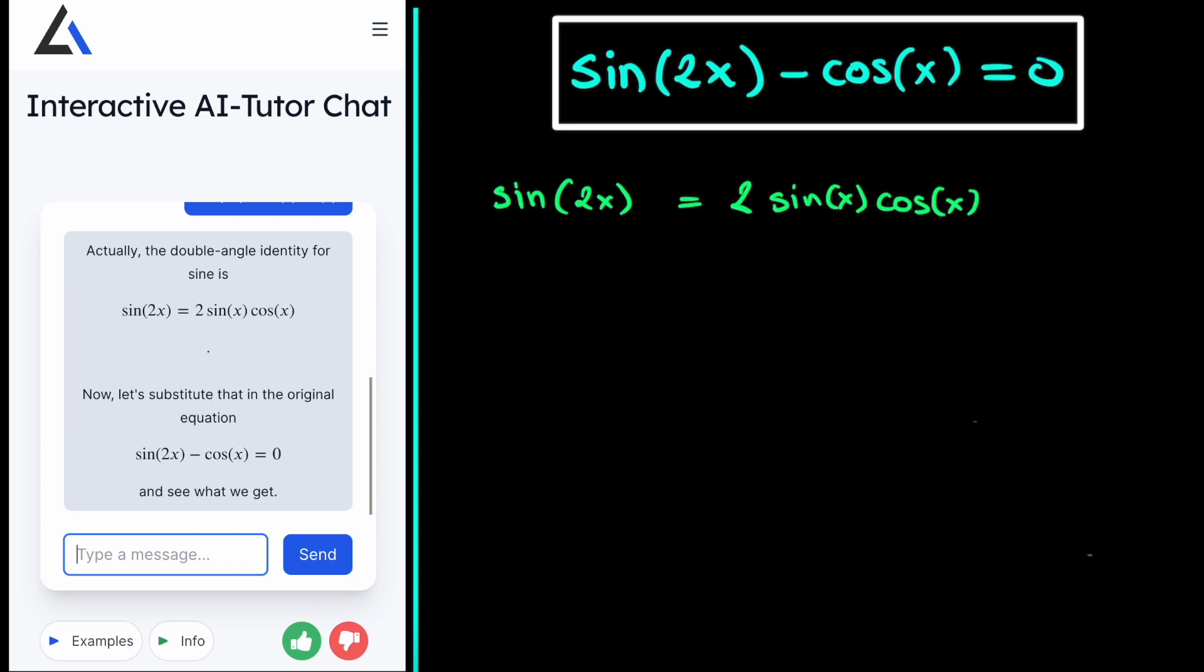And if we do this then we get the following. The sine of 2x simply becomes 2 times the sine of x multiplied by the cosine of x minus this original cosine of x which doesn't change. And this has to be equal to 0. So this is already our first step.